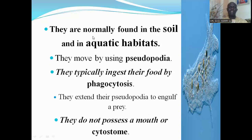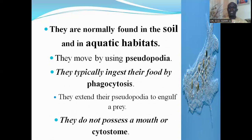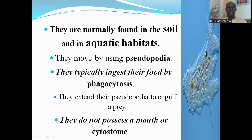The amoeboid protozoans are normally found in soil and in aquatic habitats. They move by using pseudopodia and typically ingest their food by phagocytosis, in which the food particle is engulfed. They surround the food with pseudopodia and engulf it. They extend the pseudopodia to engulf the prey and do not possess a mouth or cytostome.